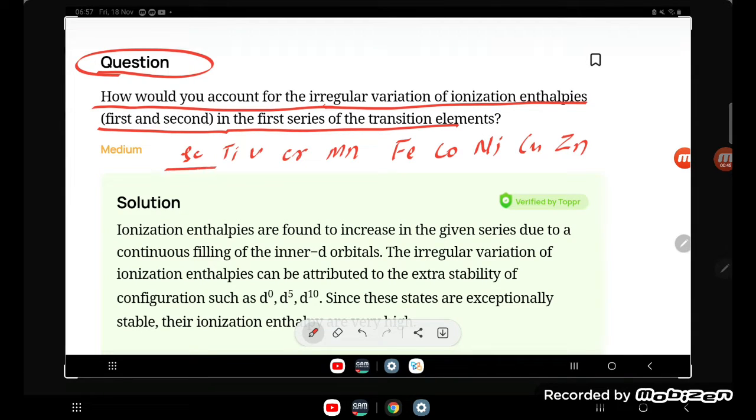Ionization enthalpies are found to increase in the given series due to continuous filling of the inner d orbitals.